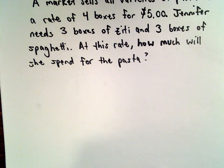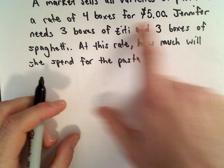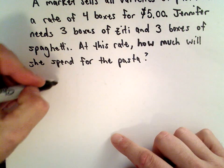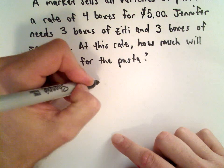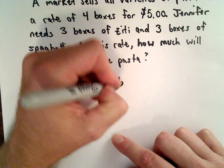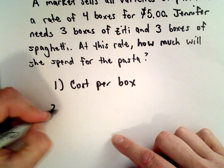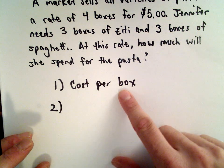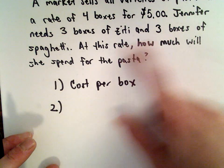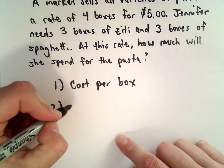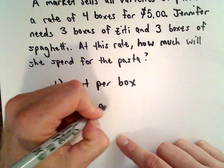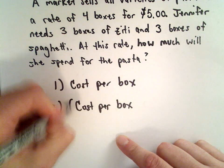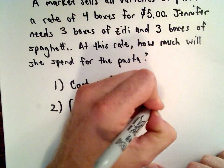So my strategy on this problem is we know it's four boxes for five dollars so the first thing I'm going to do is figure out how much it costs. I'm going to figure out the cost per box and then step two once I know the cost per box well she's getting three boxes of ziti, three boxes of spaghetti, that's six boxes total so I'm going to take the cost per box and then I'm simply going to multiply that by six.